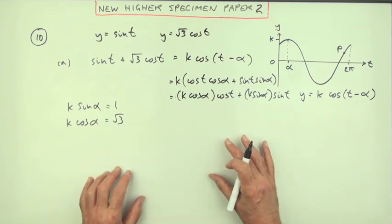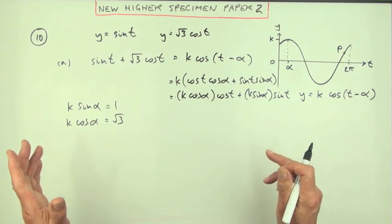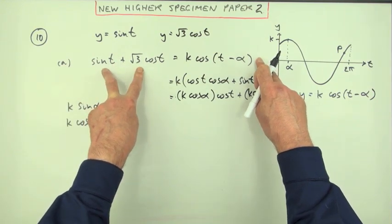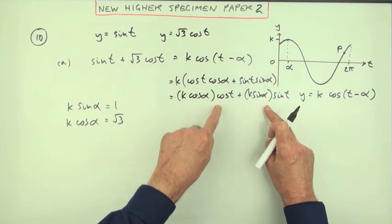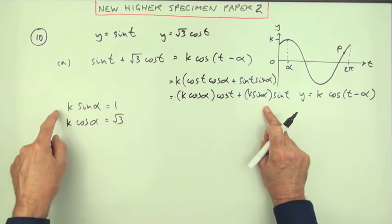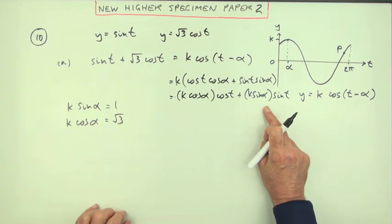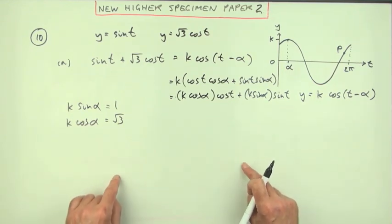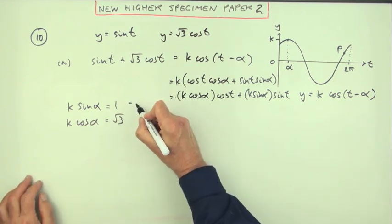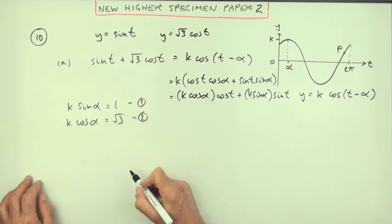Now the marking scheme goes a bit haywire here because what it says is you've got one mark just for knowing to add them and say it's equal to this, one mark for expanding this, and one mark for making the statement of these two parts. That only leaves one mark for working out k and alpha. Well, I'm still going to stick to my rigorous demonstration of it.